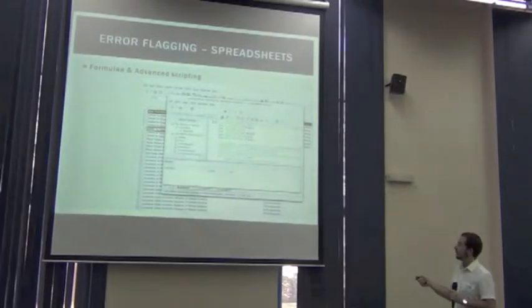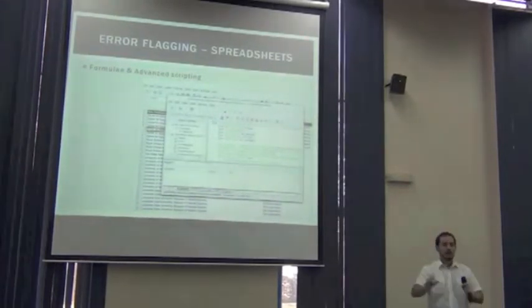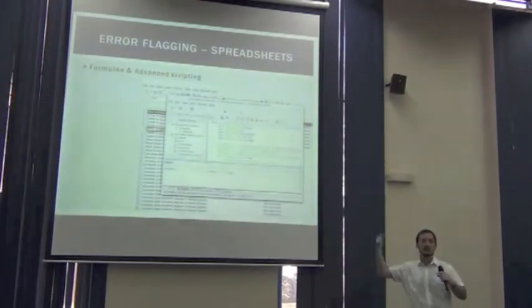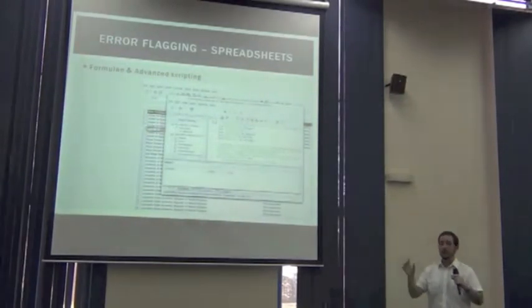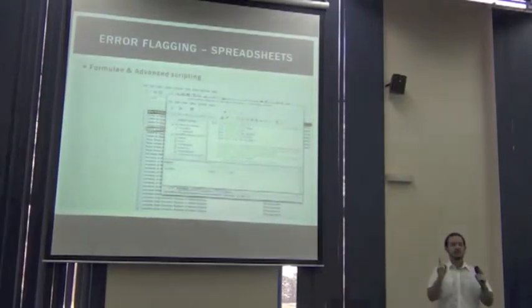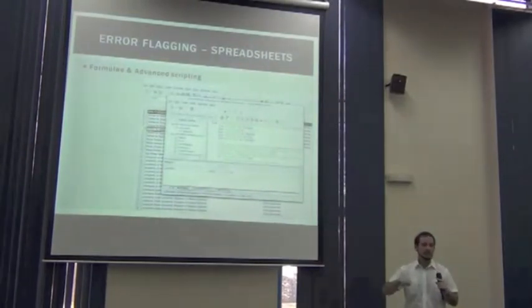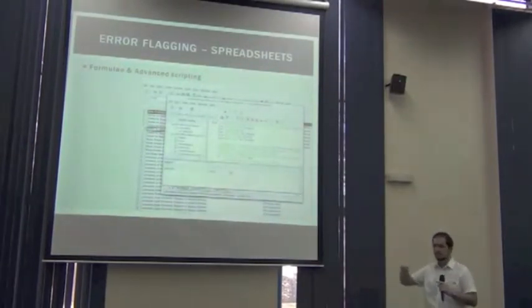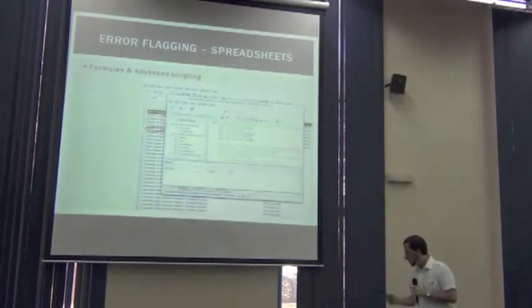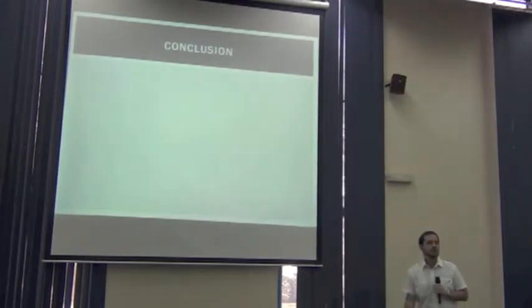We could, for example, prepare a script that takes the coordinates, prepares a query to an external database, returns the country value, compares the extracted country value with the country in our data series, and sees if they match. If they match, don't do anything. If they don't match, then flag. Everything in a single step with a single script. This is why spreadsheets are a good way of flagging.